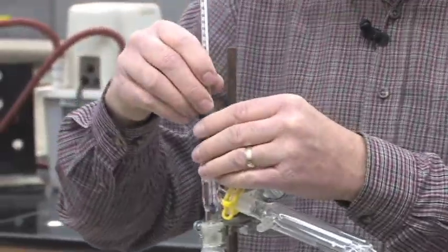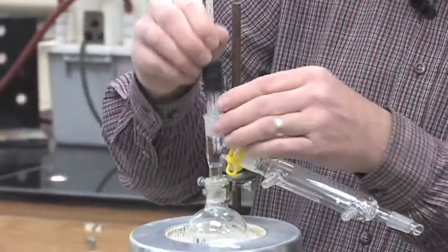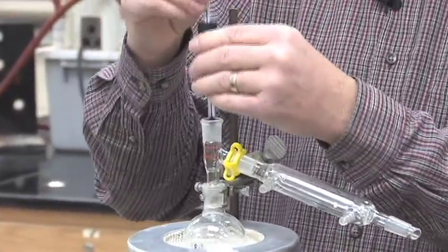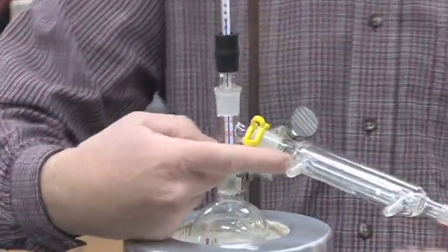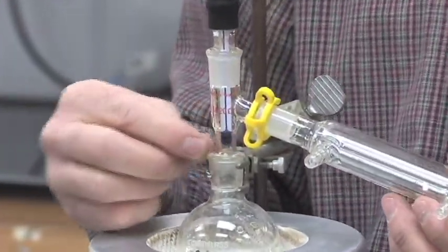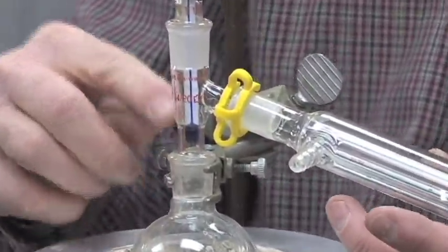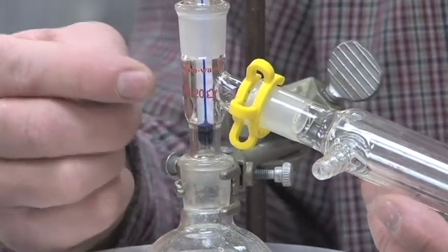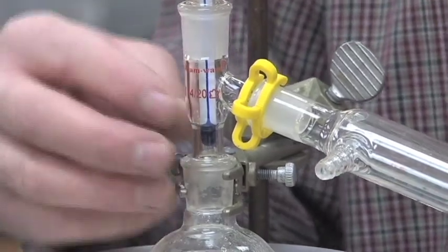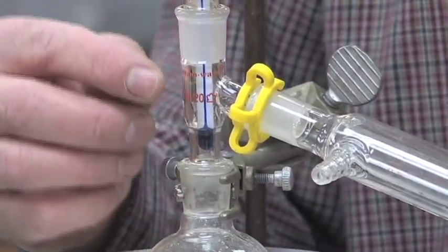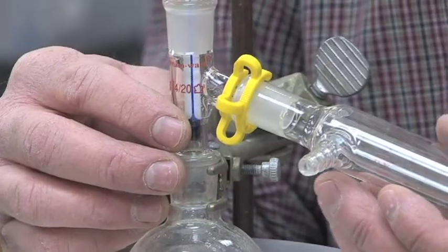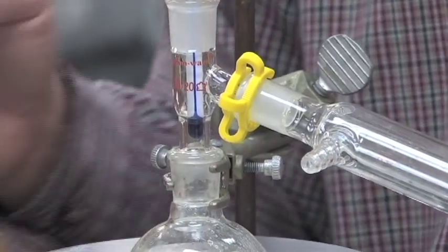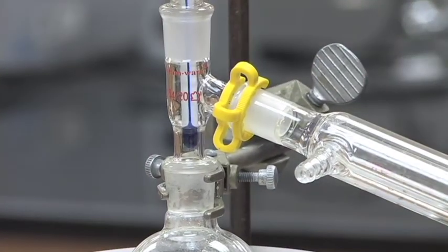So what we need to do is make sure the bulb of our thermometer is down below the arm going to the condenser in the setup. If the bulb is higher than up here where the arm comes off to the condenser, what will happen is your vapor is already starting to condense and you're not going to get a good boiling point temperature for your liquid that you're trying to distill.